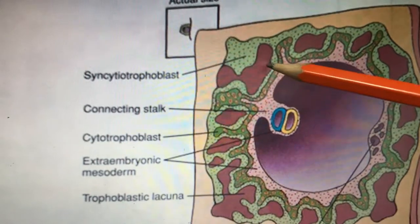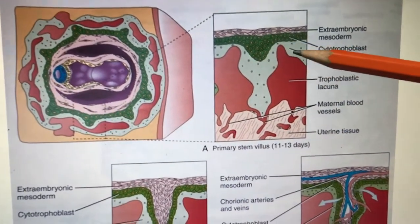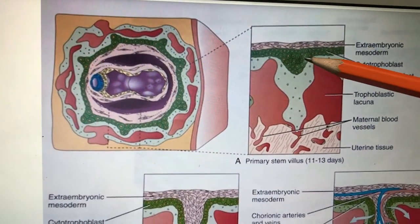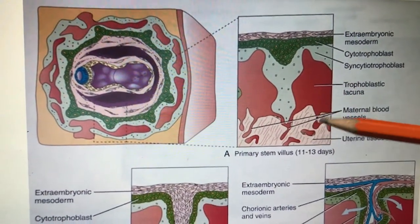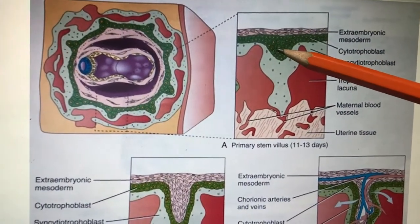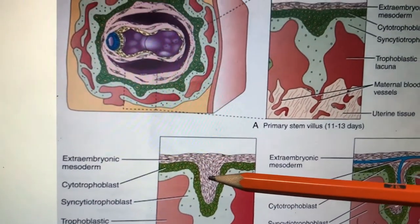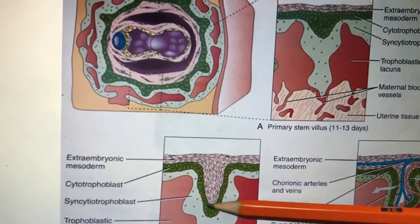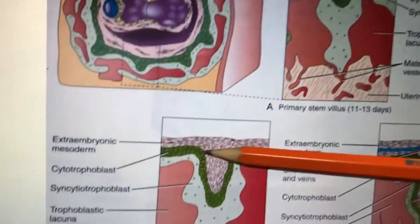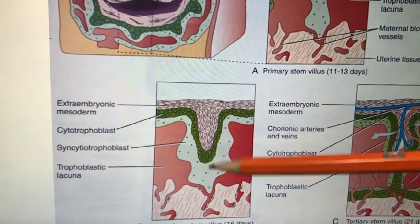Blood mixes in the lacunae — uteroplacental circulation exists. The villi are encroaching. The primary villus consists of syncytiotrophoblast and cytotrophoblast entering the uterine endometrium. The secondary villus: this is an MCQ point — primary villi have only two layers (cytotrophoblast and syncytiotrophoblast); secondary villi have cytotrophoblast and syncytiotrophoblast along with the mesoderm entering inside.